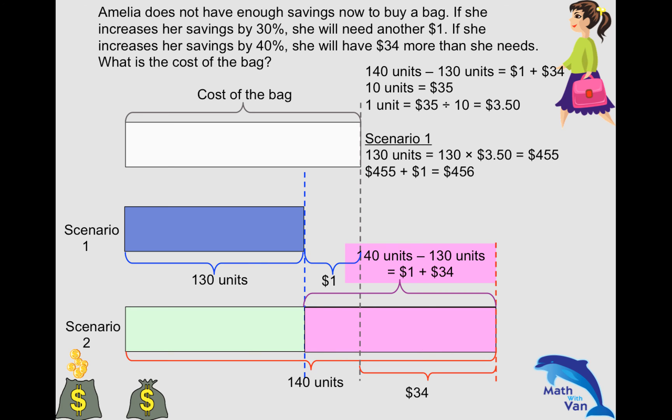Likewise for scenario two, use it to check with a quick calculation. She has an excess of 34 dollars, so take away 34 dollars from 140 units. That gives you 456 dollars. So that's your answer.